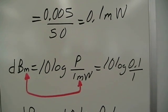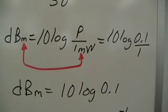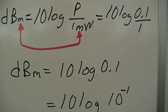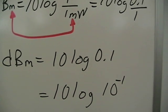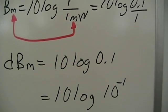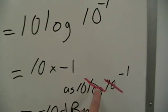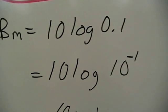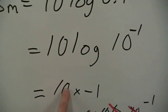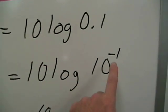This becomes 10 log of 0.1. I like to convert my values to powers of 10: 10 log 10 to the -1. 10 to the -1 is 0.1. This allows me to cancel out the log function and the power of 10, leaving me with 10 times -1. So just multiply this exponent by 10 by canceling those out.